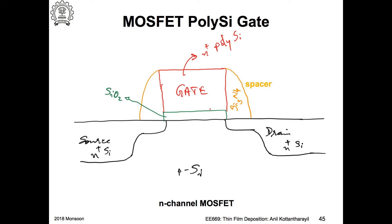Increase the doping. The depletion region width is inversely proportional to the square root of the doping concentration. So I can increase the doping concentration and then I will get a thinner depletion region.